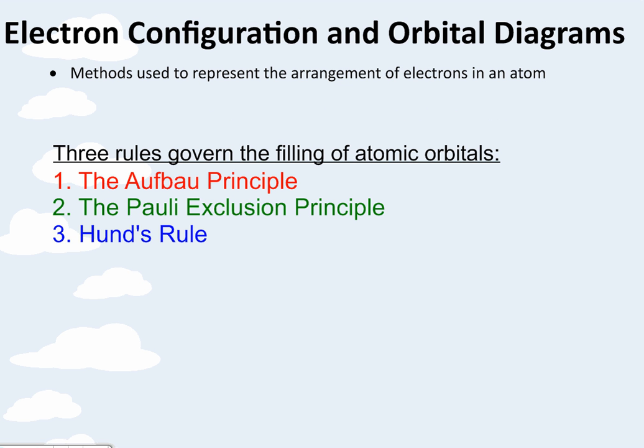Electron configuration and orbital diagrams. These are two things I want you to be able to do for me. They're methods used to represent the arrangement of electrons in an atom. So there's three rules, the Aufbau principle, Pauli exclusion principle, and Hund's rule. We're going to learn about what those are.